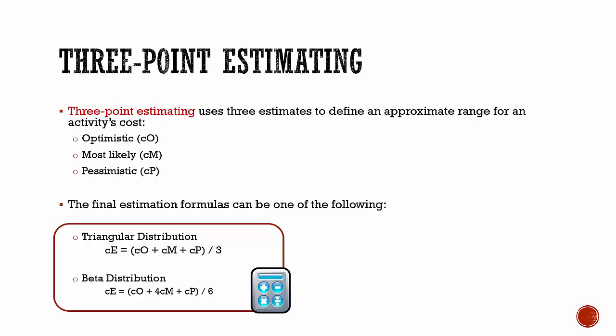The final estimation should be calculated depending on the assumed distribution of values within the range of three estimates. The most frequently used formulas are triangular distribution and beta distribution, which is based on traditional PERT analysis. Have a look at the slide to learn the formulas.